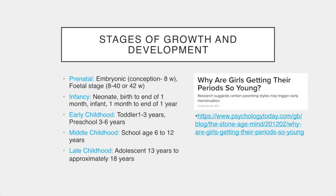Growth and development has been divided into five stages, each with typical aspects to the stage. The prenatal or in utero stage includes an embryonic stage from conception to eight weeks and the fetal stage from eight weeks to term, usually between 40 and 42 weeks. Infancy includes the neonate, defined as from birth to one month, and subsequent infancy up to the end of year one. Early childhood includes the toddler, one to three years, and preschooler, aged three to six years. Middle childhood is typical school age from six to 12 years. Late childhood encompasses biological adolescence from 13 to 18 years, including the physical and physiological changes of adolescence rather than the social tasks of growing independence, which are socially constructed and therefore variable.